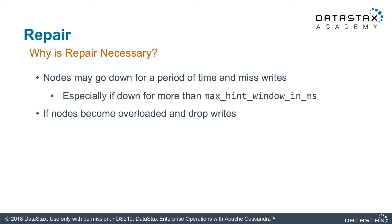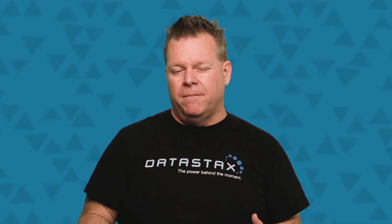Why is repair necessary? There are situations where it's absolutely mandatory. For instance, if a node goes offline for a long period of time beyond the GC grace period — meaning how long hints are stored on other nodes — you need to run a repair to make sure all the data is consistent once that node comes back online. Another situation is if a node was overloaded and missed some writes. This can happen in a large system — one bad day for one node can make your data inconsistent, and repair will fix that.